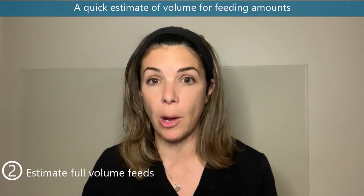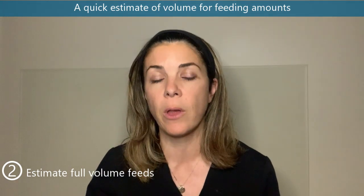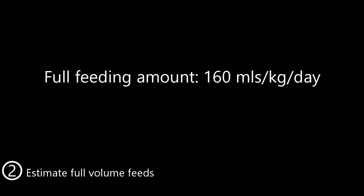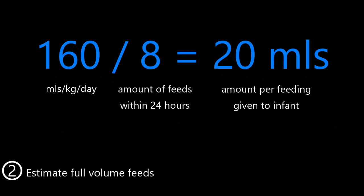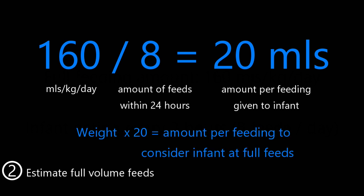The second calculation is really helpful when you quickly want to estimate whether a baby is getting a good amount of feeds — whether you're on rounds, you've just inherited the baby from another nurse, or parents ask you what full feeds would be for their baby. Let's assume full feeds are 160 mL per kilo per day — the upper end of what we're aiming for — and that the babies are feeding Q3 hours, so eight feedings a day. Because 160 divided by 8 equals 20, the answer is simply weight times 20.